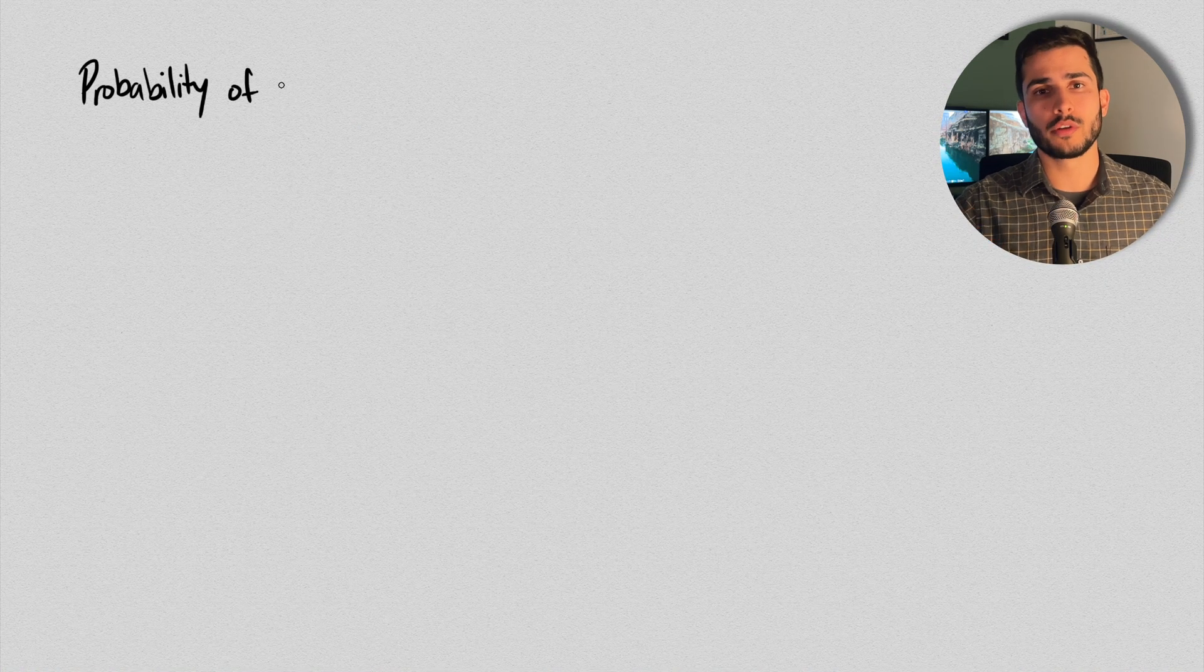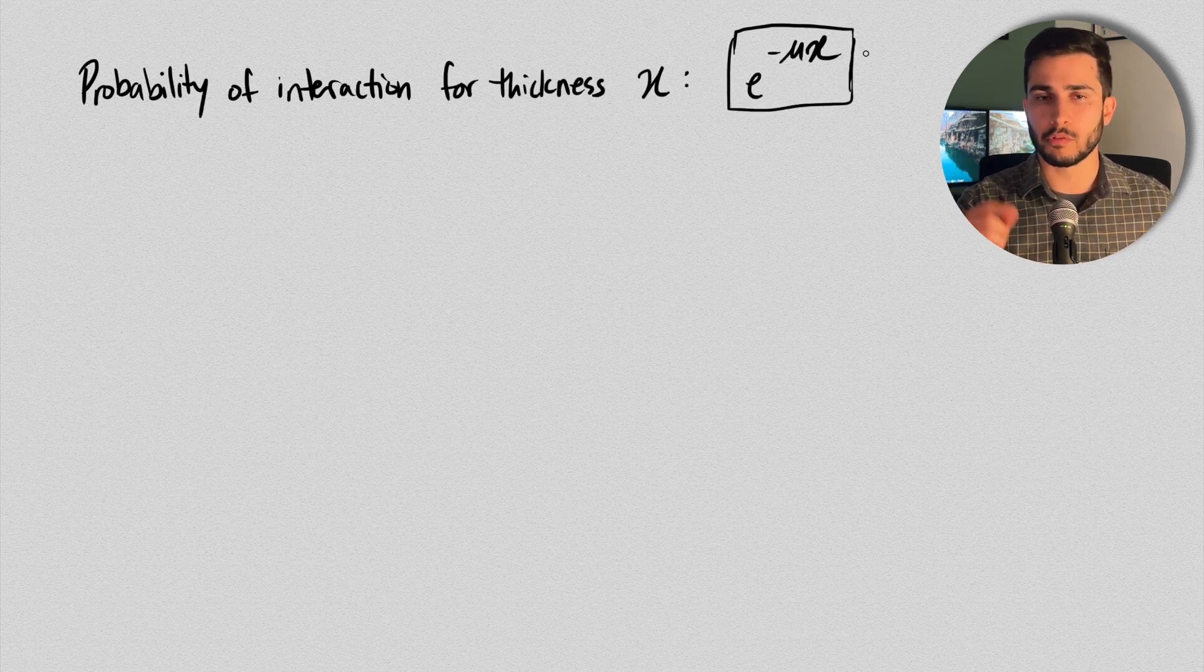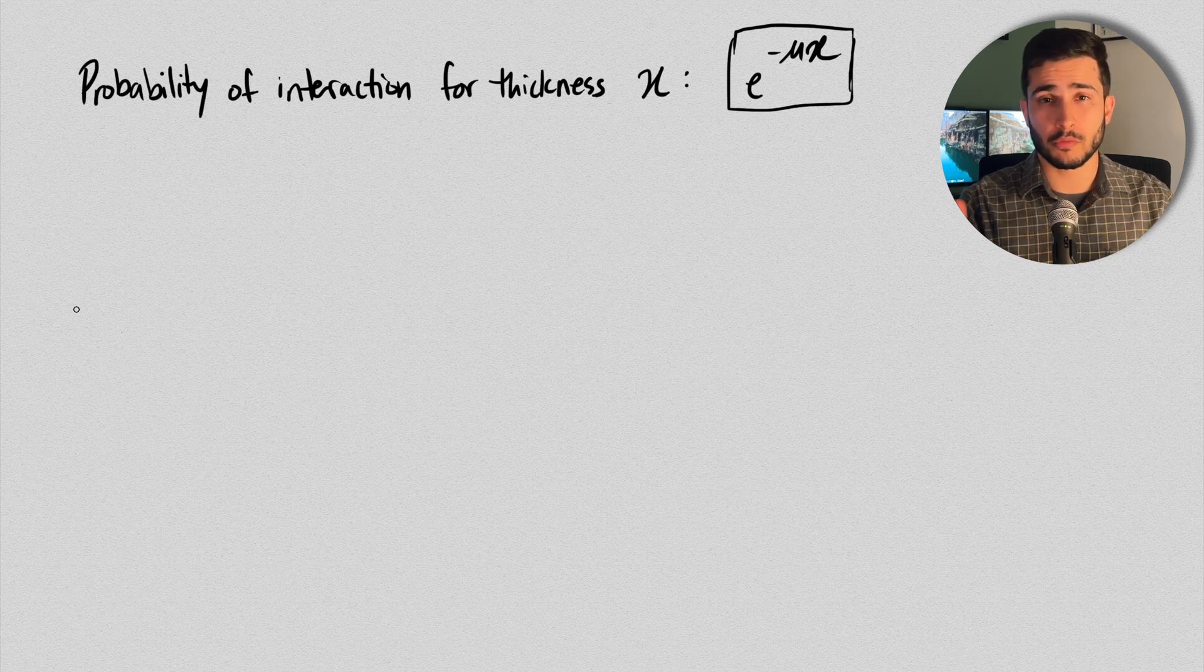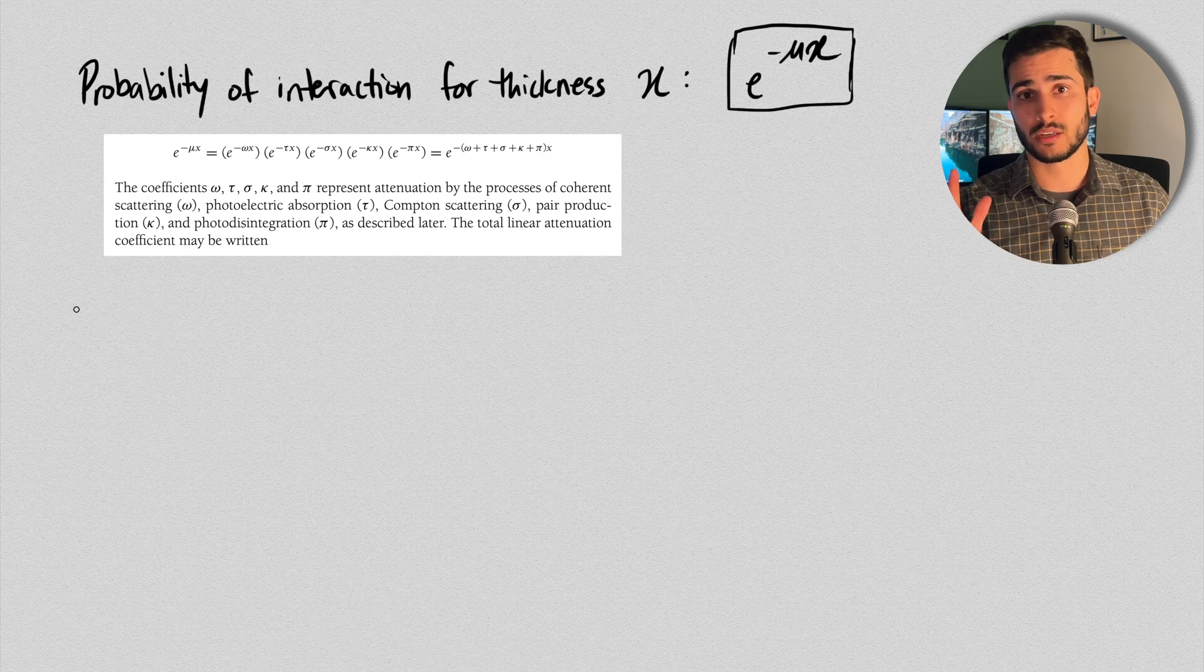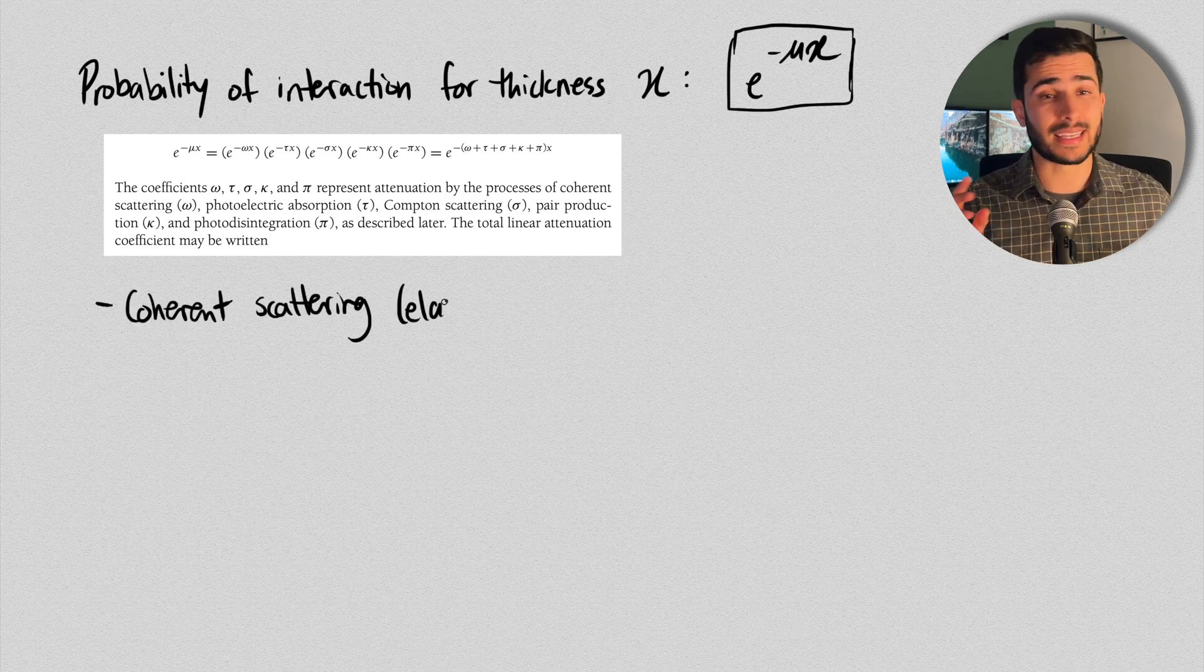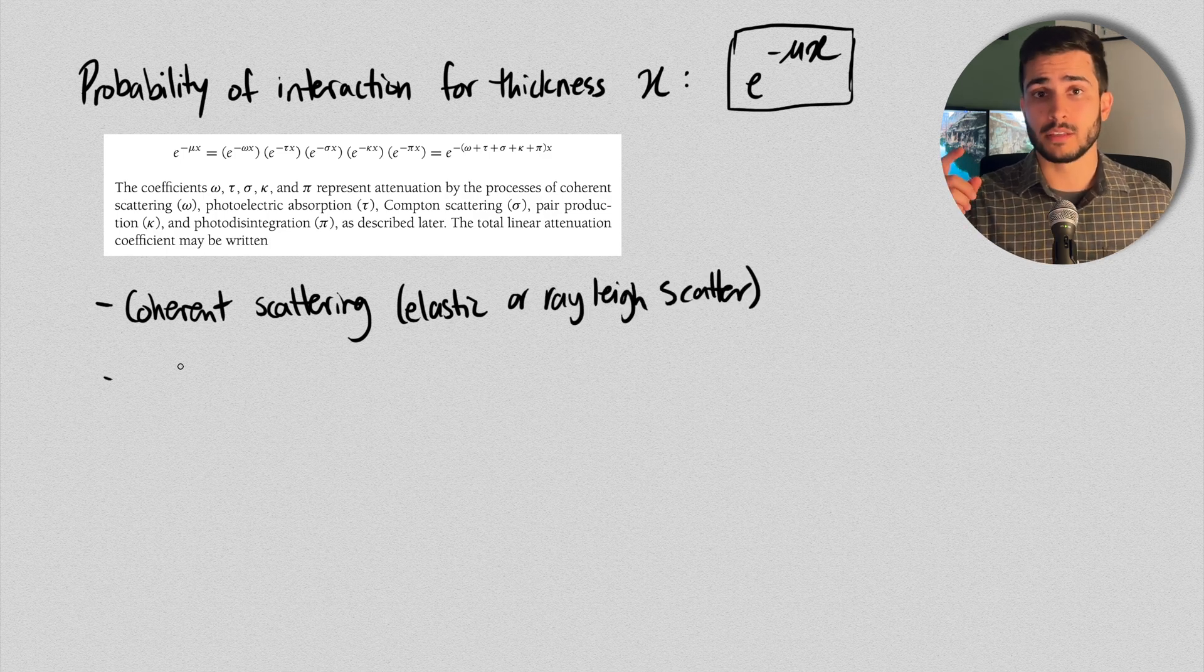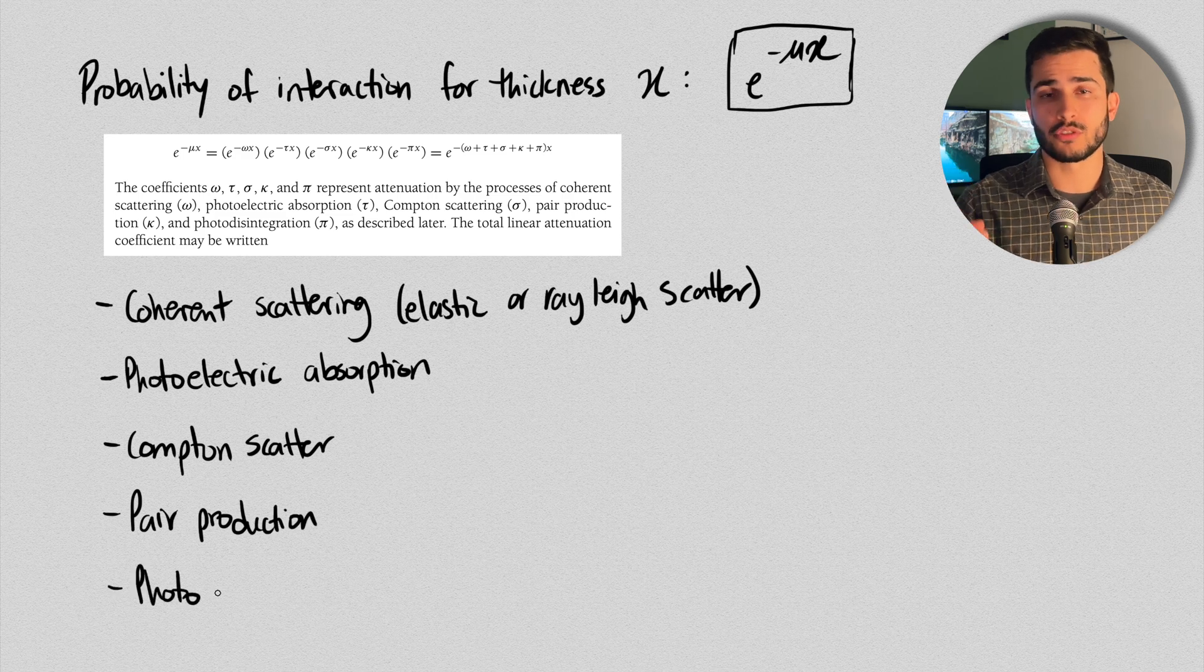Now, the probability of a photon going through a slab of some thickness X without interacting with it is given by this probability portion of the formula from earlier. This probability portion of e to the power of negative μX is actually a product of the number of probabilities that the photon doesn't interact with any of the five possible X-ray processes. That is, X-ray interactions. And here's how it's expressed, where each of these symbols represents the attenuation process. So we have coherent scattering, photoelectric absorption, Compton scatter, pair production, and photodisintegration.